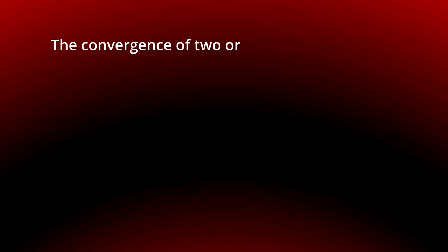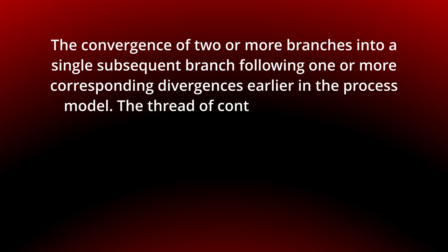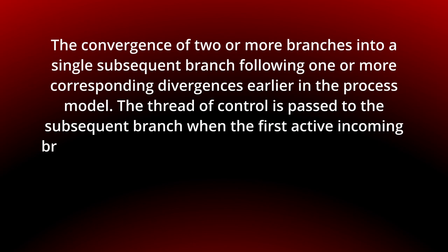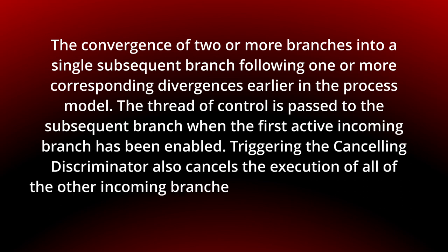The convergence of two or more branches into a single subsequent branch following one or more corresponding divergences earlier in the process model. The thread of control is passed to the subsequent branch when the first active incoming branch has been enabled. Triggering the cancelling discriminator also cancels the execution of all the other incoming branches and resets the construct.